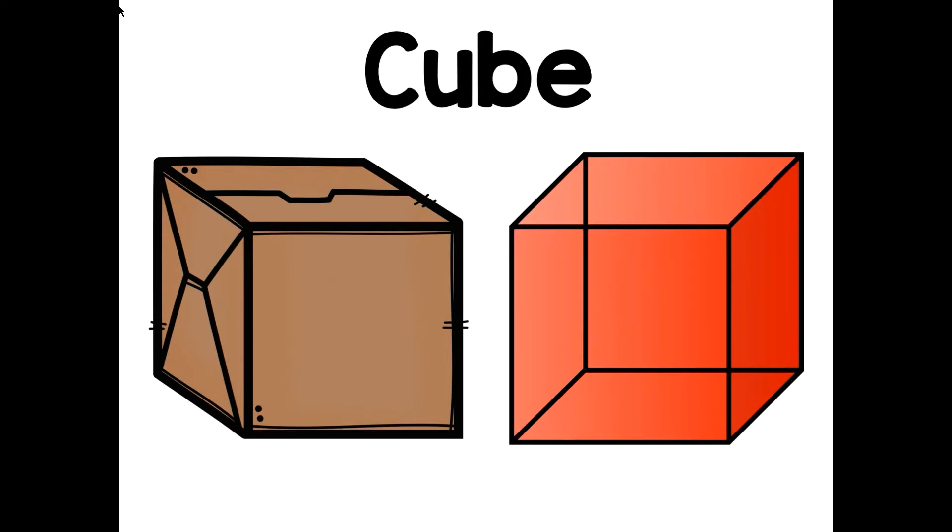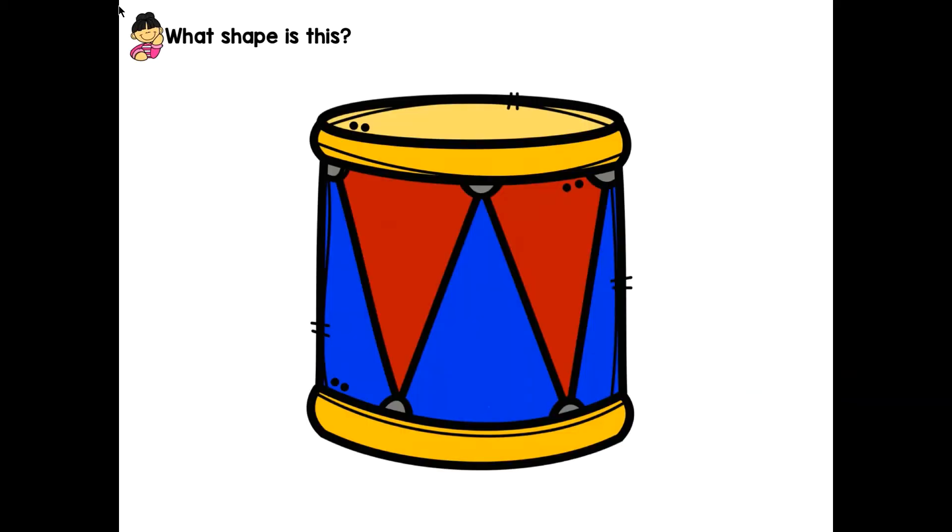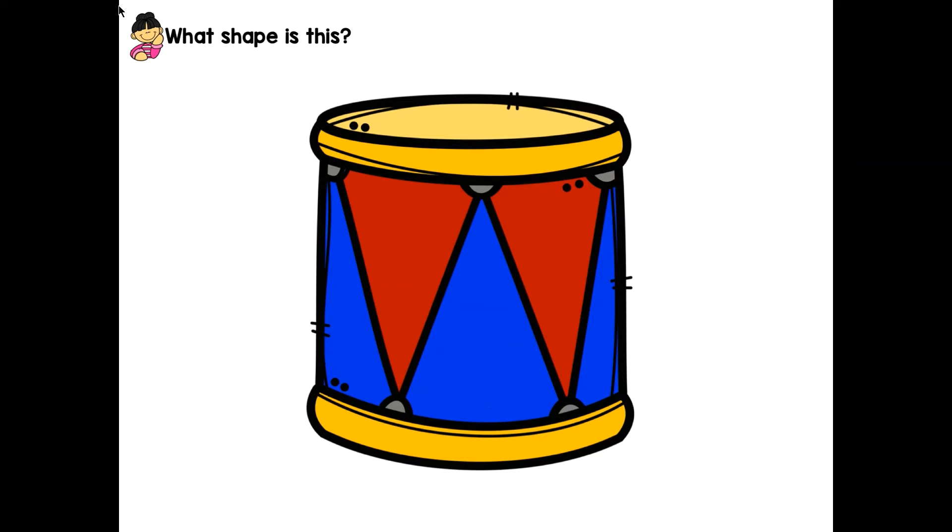This is a picture of a drum. If you play in a band or go to a parade, you might see this shape. What shape is a drum? If you said cylinder, you were right. Let me give you a round of applause.